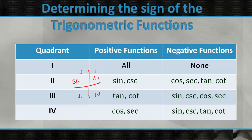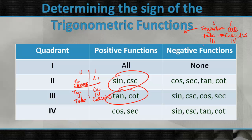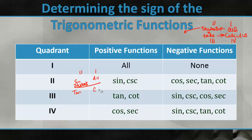The way to remember this is the phrase 'All Students Take Calculus.' Starting in quadrant 1 and going 2, 3, 4: All — everything positive in quadrant 1. Students — S is sine and cosecant positive in quadrant 2. Take — T is tangent and cotangent positive in quadrant 3. Calculus — C is cosine and secant positive in quadrant 4. All the rest are negative. Just an easy way to remember that.